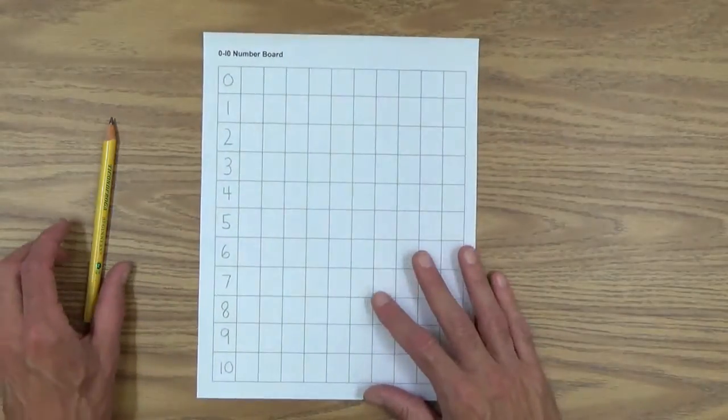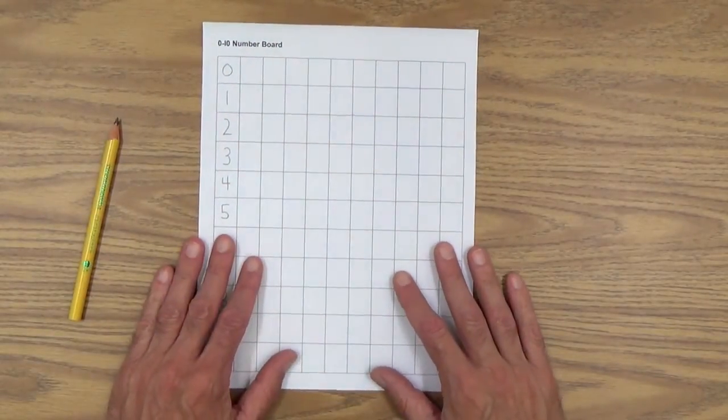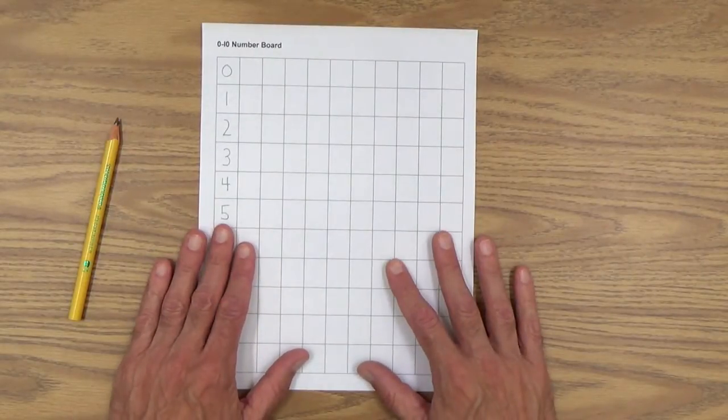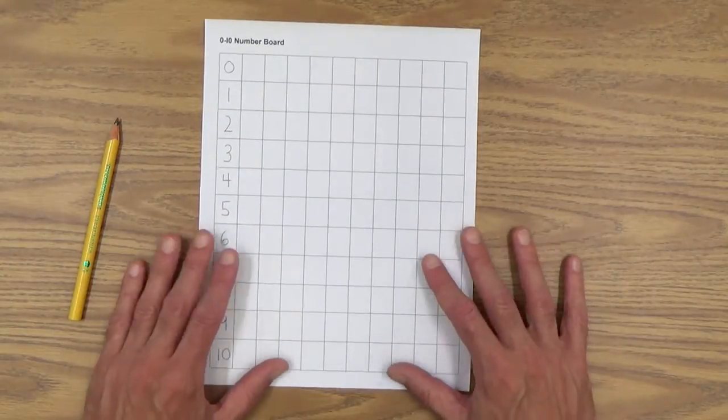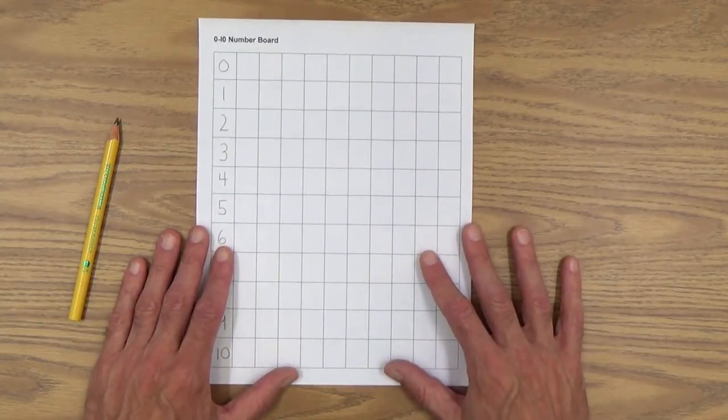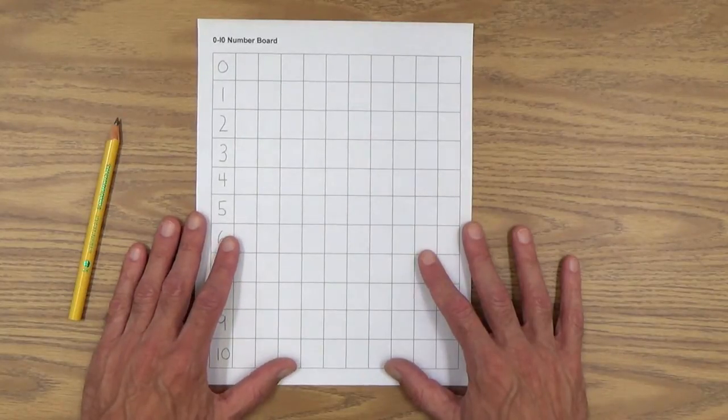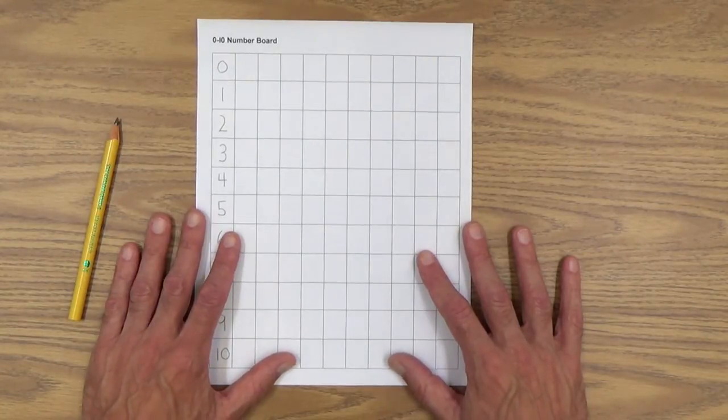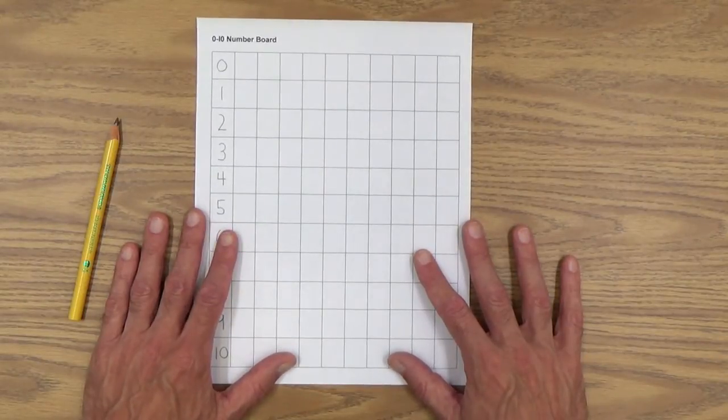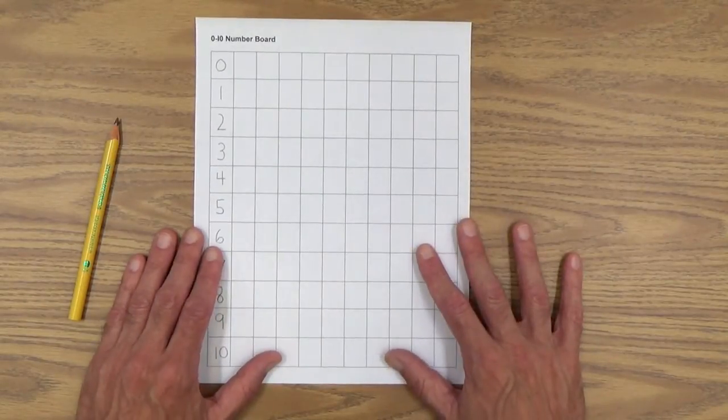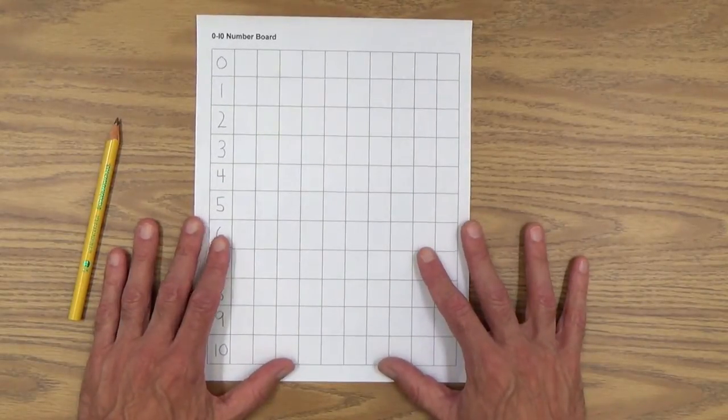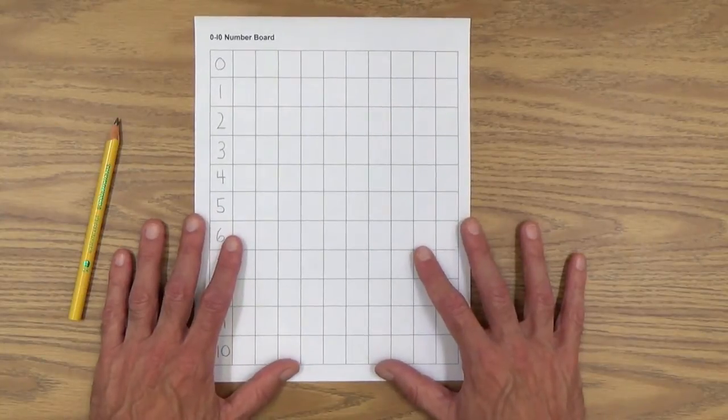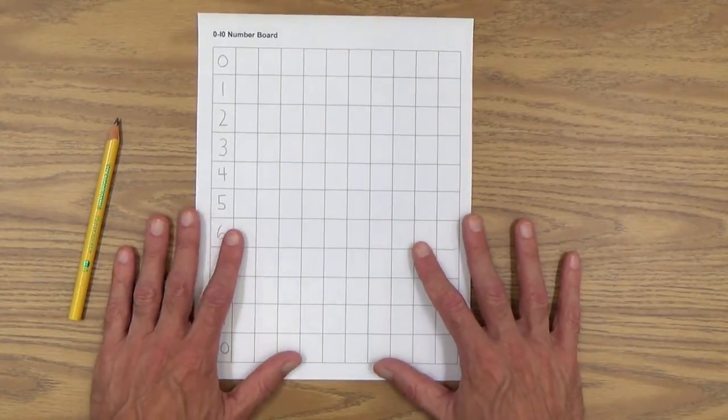So let's start with the 0 to 10 number board first. Before I get started here, I just want to let you know that these two activities, number boards and missing numbers, are more of assessments or like a knowledge check for your child. So these are not something you want to be doing over and over again. It's kind of a way for you to check to see if your child recognizes numbers, can count and can write numbers.